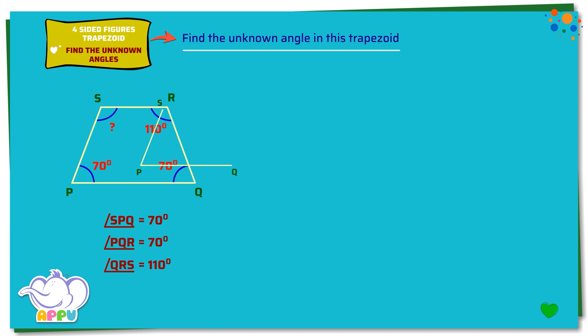Angle SPQ plus angle PQR plus angle QRS plus angle RSP equals 360 degrees. 70 degrees plus 70 degrees plus 110 degrees plus angle RSP equals 360 degrees.